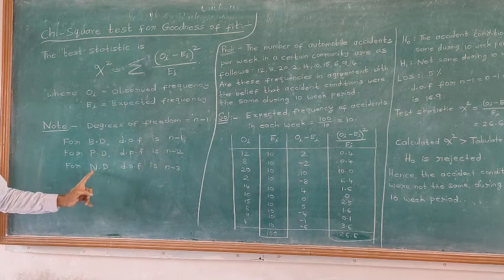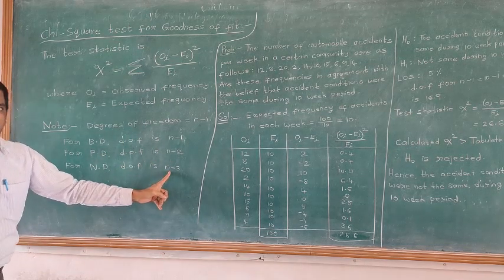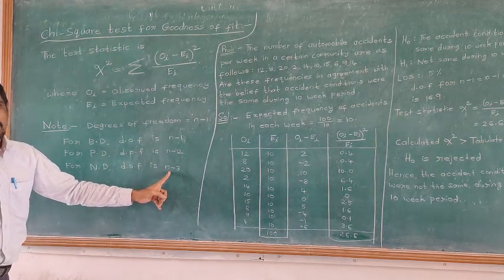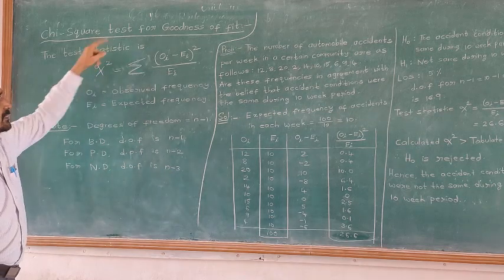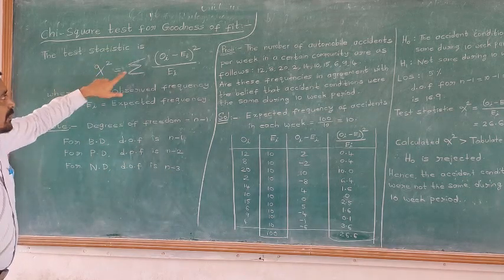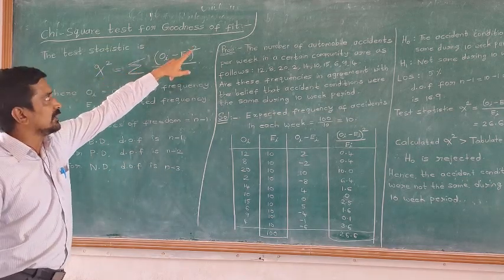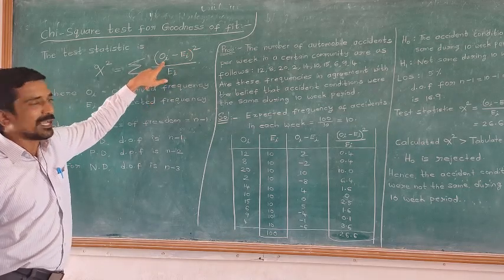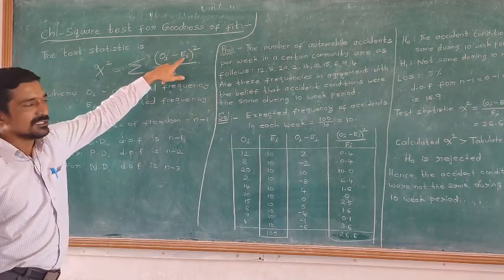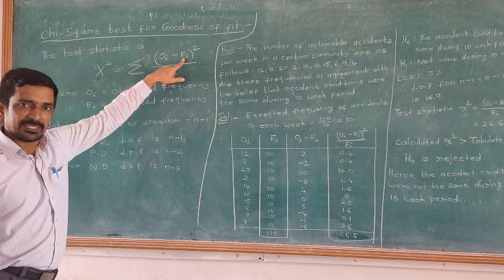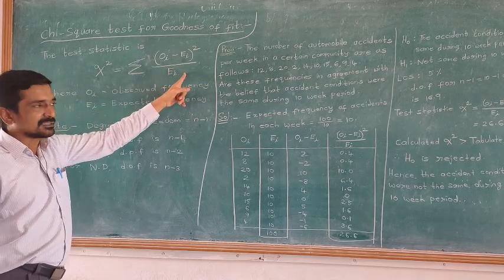Similarly, in normal distribution, you consider the table value under degrees of freedom N minus 2. The test statistic formula is the summation of (O_i minus E_i) squared divided by E_i, where O_i is the observed frequency and E_i is the expected frequency.